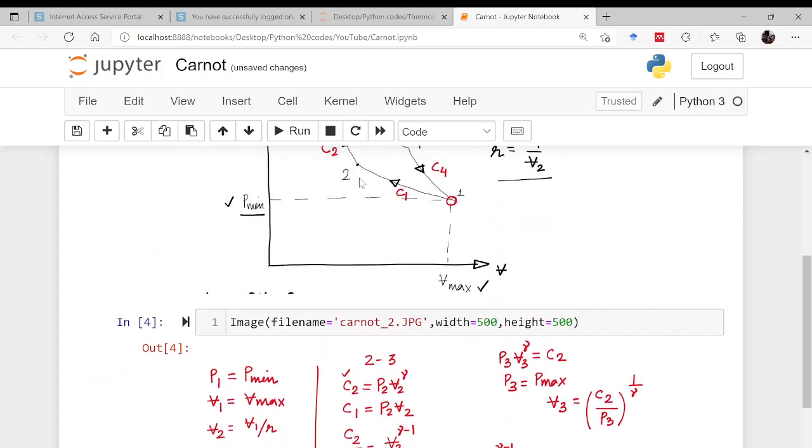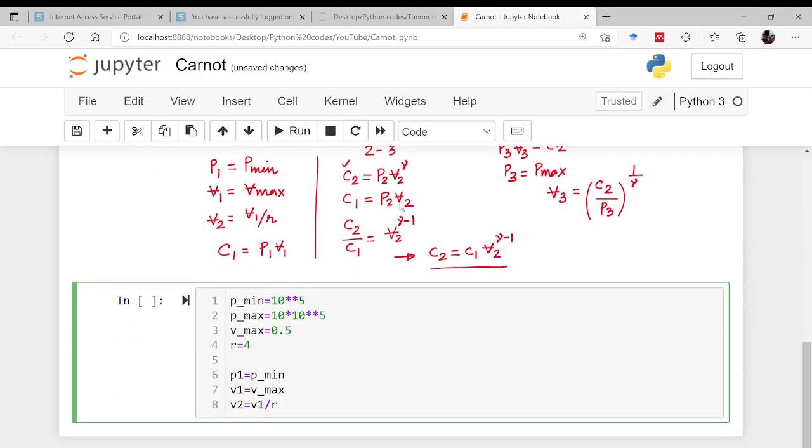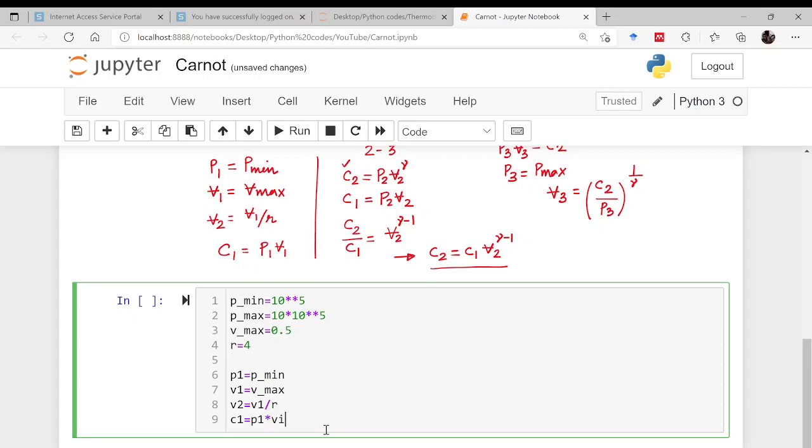V2 is equal to V1 by R, that is the compression ratio. So from this particular process I know what is P1 V1, here I know what is this volume at point number 2. Now comes the process of evaluating C1. C1 is equal to P1 V1.